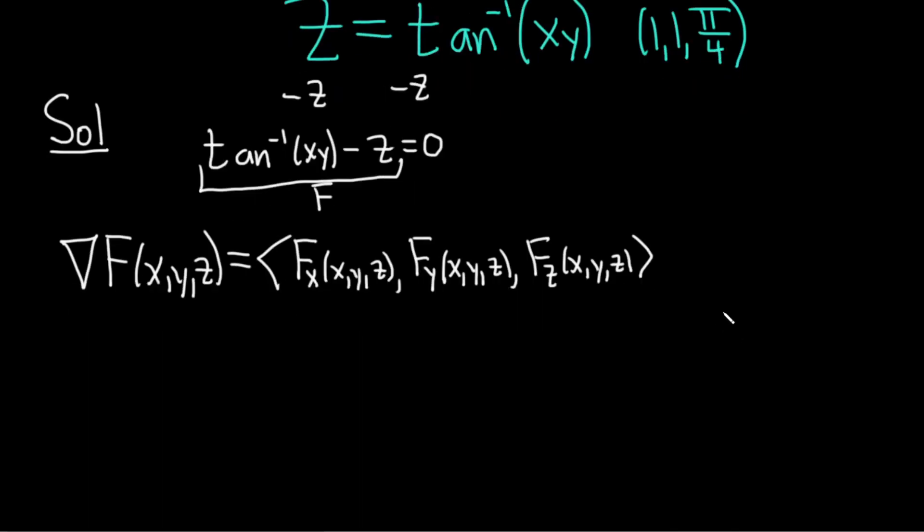Okay, so the derivative of arctan is 1/(1 + x²), right? If you take the derivative with respect to x and you have tan inverse of x, the formula tells us it's 1/(1 + x²). So here, it's arctan of xy. We have to use the chain rule. Taking the partial with respect to x, it'll be 1/(1 + (xy)²) times the derivative of the inside function. We're taking the partial with respect to x. Y is a constant. The derivative of x is 1. So we're left with a y.